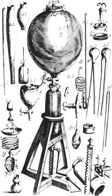The pneumatic trough was integral in work with gases or, as contemporary chemists called them, airs. Work done by Joseph Black, Joseph Priestley, Hermann Boerhaave, and Henry Cavendish revolved largely around the use of the instrument, allowing them to collect airs given off by different chemical reactions and combustion analyses. Their work led to the discovery of many types of airs, such as dephlogisticated air, discovered by Joseph Priestley.